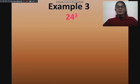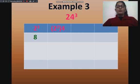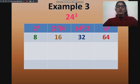Now let's take another example: 24 cube. For that, we will start from the left-hand side. First, we will write 2 cube that is 8, then 2 square into 4 that is 16, then 4 square into 2 that is 32, then 4 cube that is 64. Now, we will multiply both the middle terms with 2. So, twice of 16 is 32 and twice of 32 is 64.